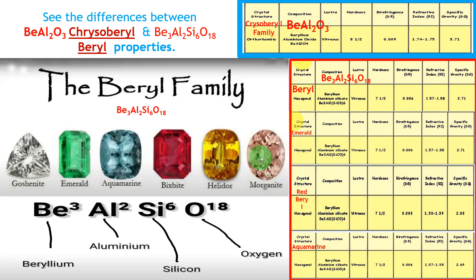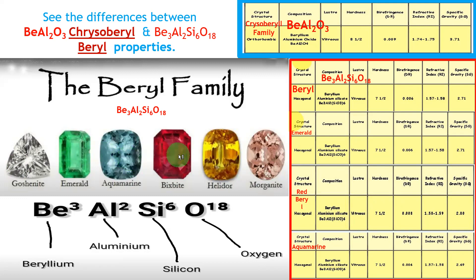Three beryllium atoms connected to two aluminium atoms, and six silicon atoms, and 18 oxygen atoms — this creates the beryl family. The varieties: goshenite is white; emerald is green; aquamarine is sea blue; bixbite is red; heliodor is yellow; morganite is purple. These are the main stones we have to learn under the beryl family.